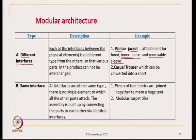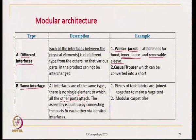The other architecture is same-interface type, where at any interface you can attach any piece. Interfaces are of the same type — there is no single element to which all other parts are attached. The assembly is built up by connecting parts to each other via identical interfaces. An example for textiles is modular carpet tiles and huge tent fabrics.